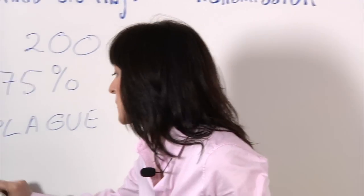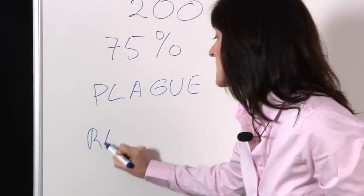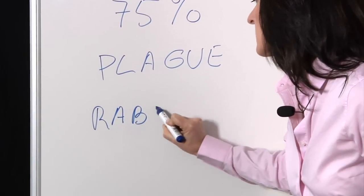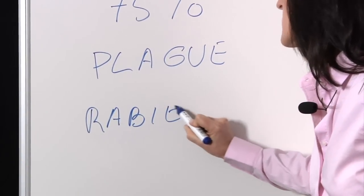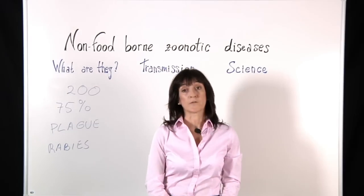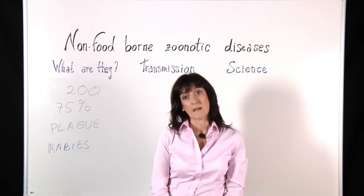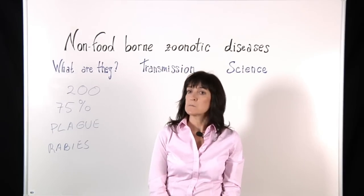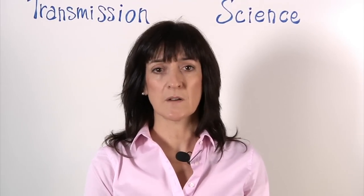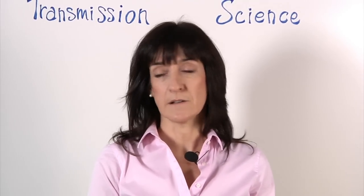We think this disease decimated approximately one third of the human population during the Middle Ages. Another important disease is rabies, a disease of carnivores and bats transmitted mostly by bites. This disease still causes 55,000 deaths a year.